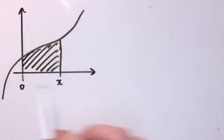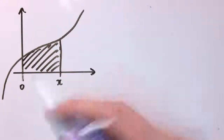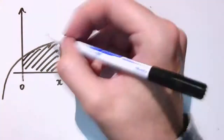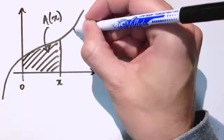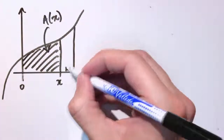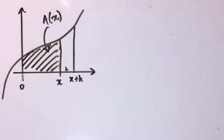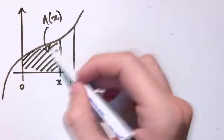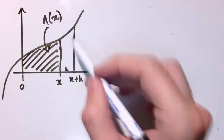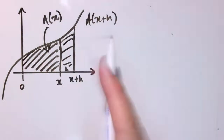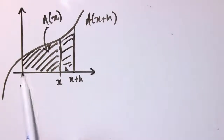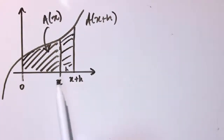I'm drawing a general curve and going up to a point x. I'm going to define an area function: A(x) is the area under the curve from 0 up to x. Then I go just a little bit further — a distance h further — to x + h. So A(x + h) represents the total area under the curve from 0 all the way up to x + h.